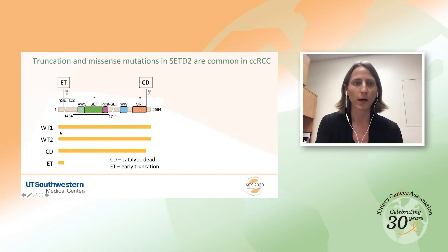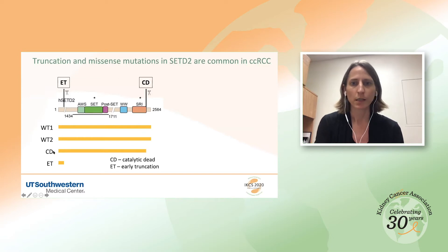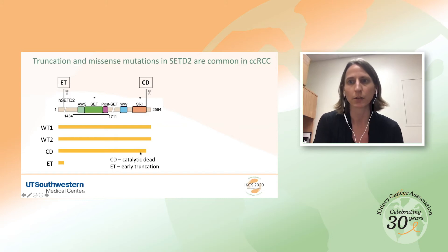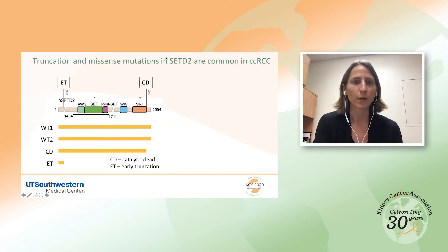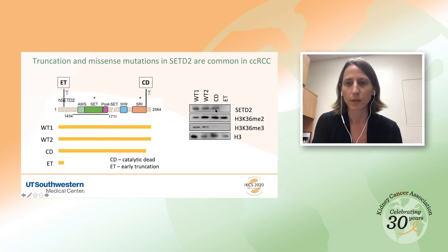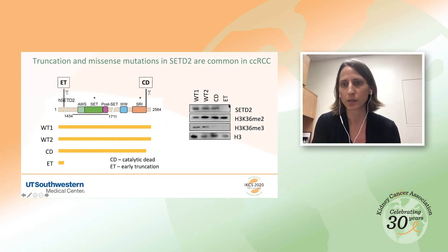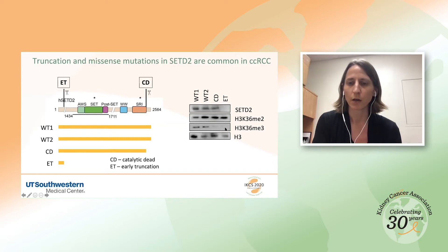To address this question, we turned to available kidney cancer cell lines with varying SETD2 mutation status. We have two cell lines wild type for SETD2: 7860 and ACHN. We also had two mutant cell lines. A498 carries a late truncation in SETD2 resulting in loss of catalytic activity in the context of a nearly full-length protein. A704 contains an early truncation — a putative loss of function or loss of SETD2 protein. We validated these observations by Western blot, confirming that the early truncation cell line lacks SETD2, and that both catalytic dead and early truncation cell lines show reduced H3K36 trimethylation.